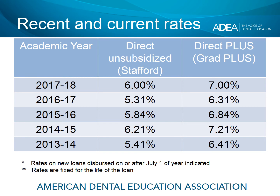This chart shows recent interest rates and the current rates on direct unsubsidized loans — occasionally called Stafford loans — and direct plus, also called Grad Plus. The rates for loans dispersed on or after July 1, 2017, for the 2017-18 academic year are 6% fixed for direct unsubsidized and 7% fixed for direct plus. Note that direct plus is always a full point higher than direct unsubsidized. Looking at the chart, rates actually went down for a couple of years before going back up this year — they didn't go up a full percentage point, but they did go up.